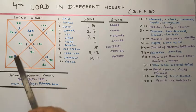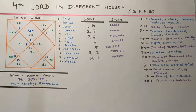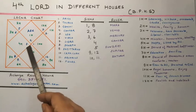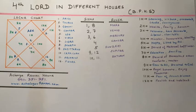If the 4th lord be in the 6th house, results are not elaborated here. If the 4th lord be placed in the 7th house, the native shall be endowed with a high degree of education. He will sacrifice his patrimony and would be akin to a dumb person in an assembly.